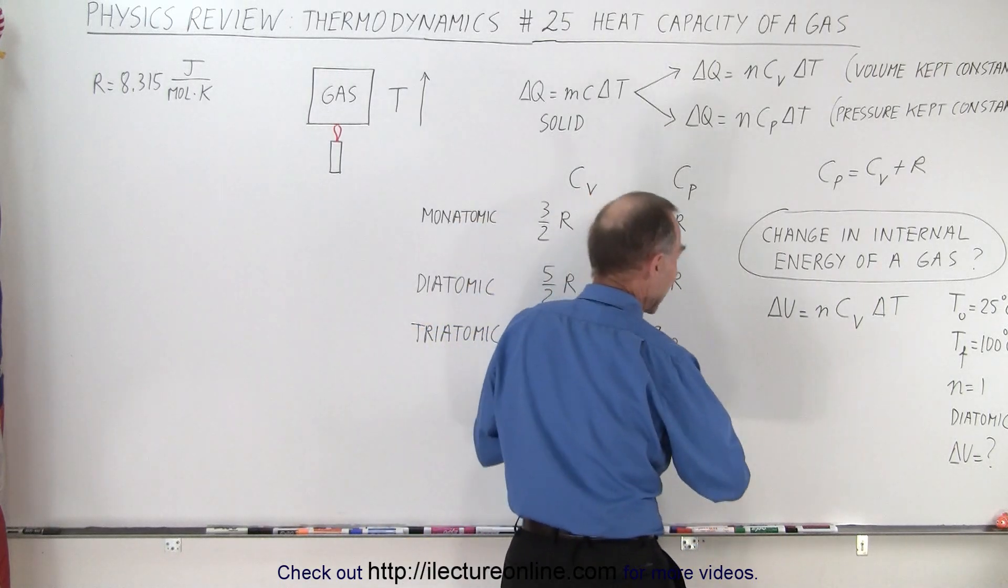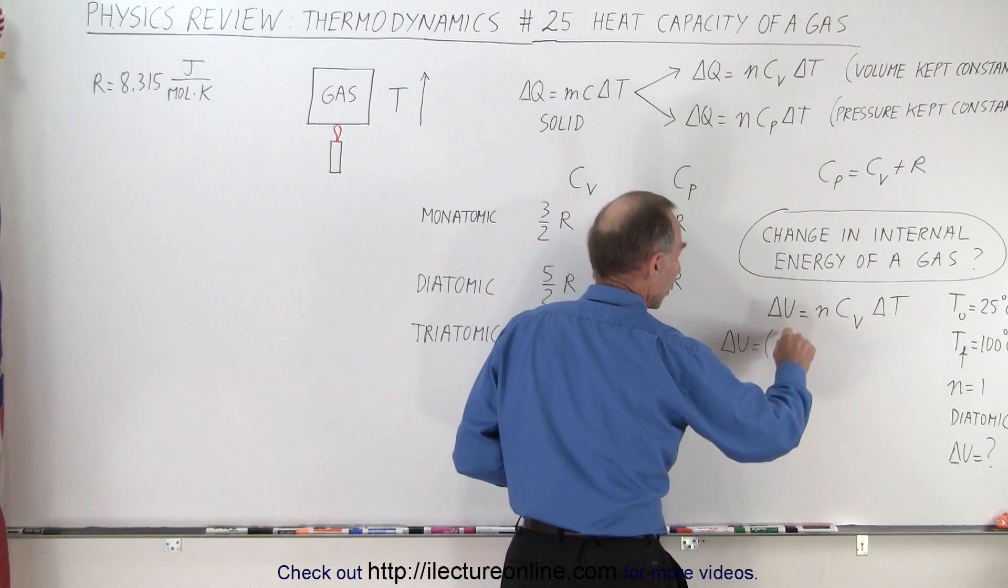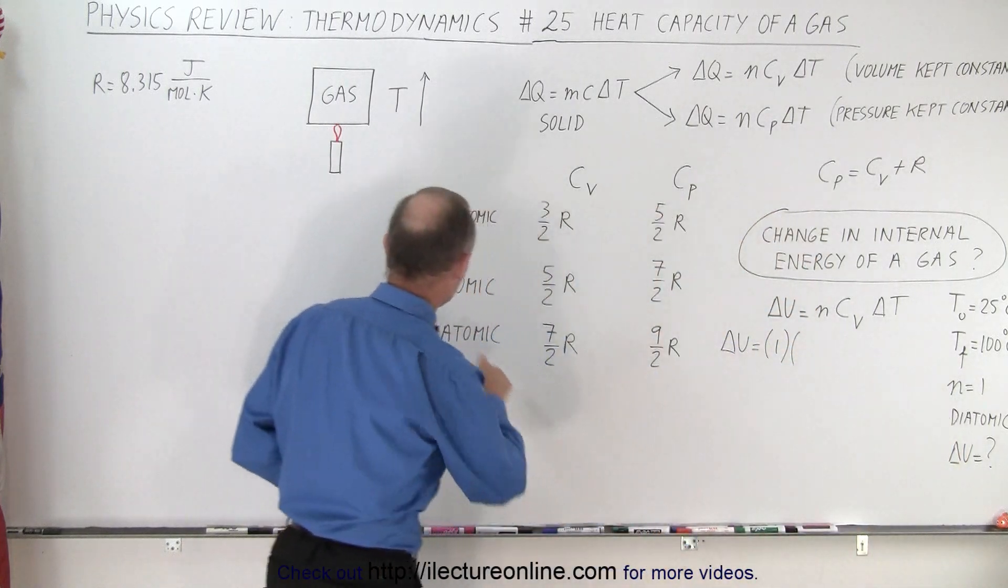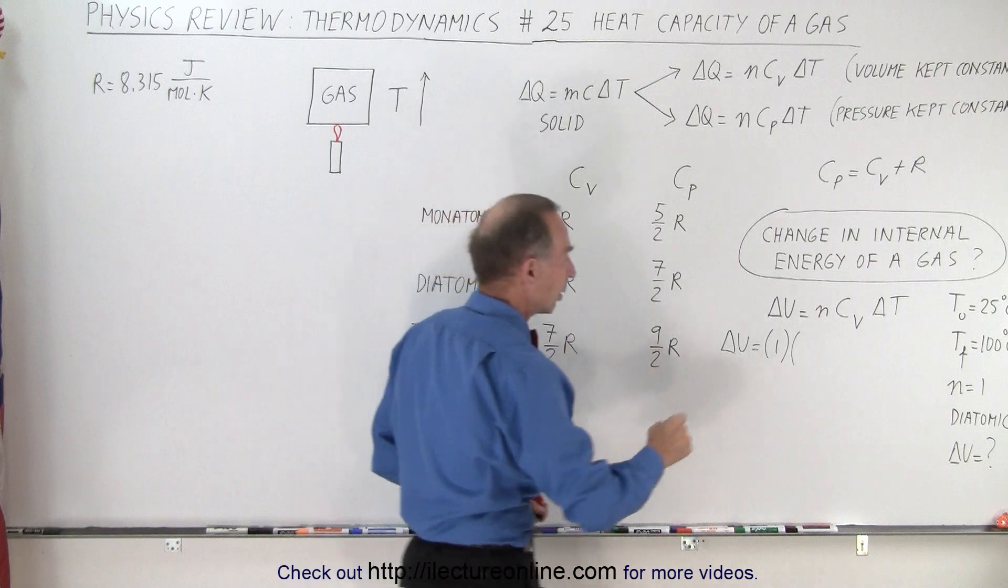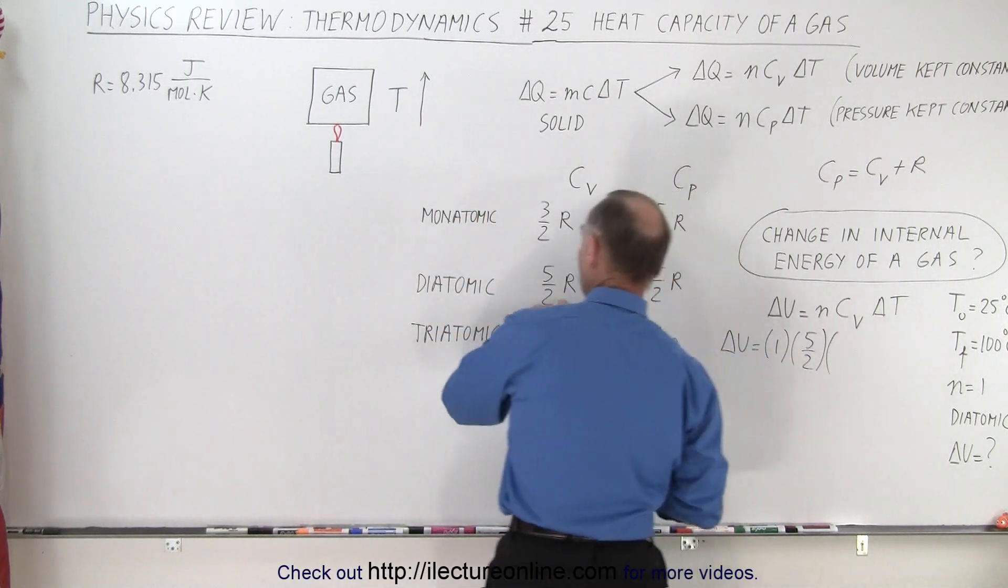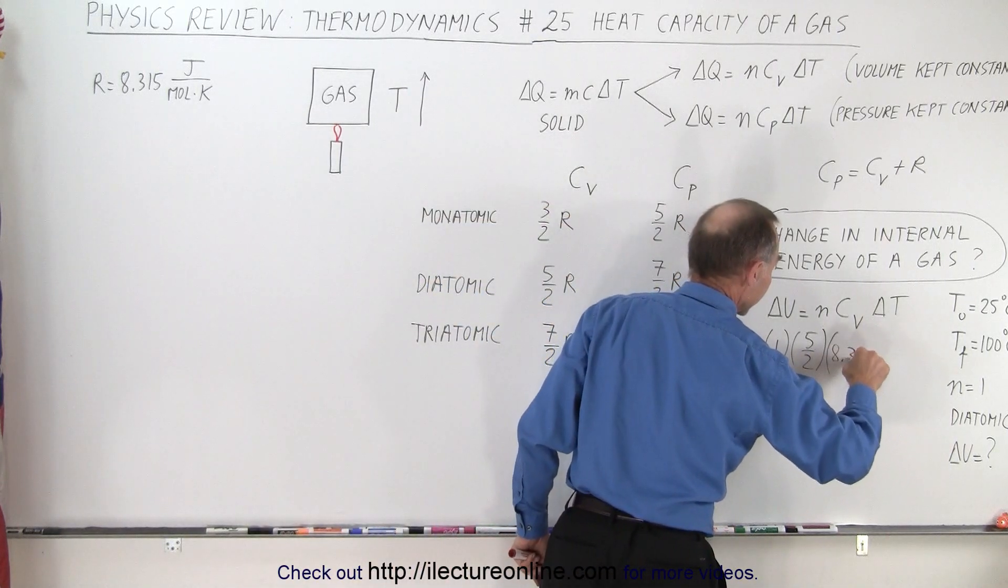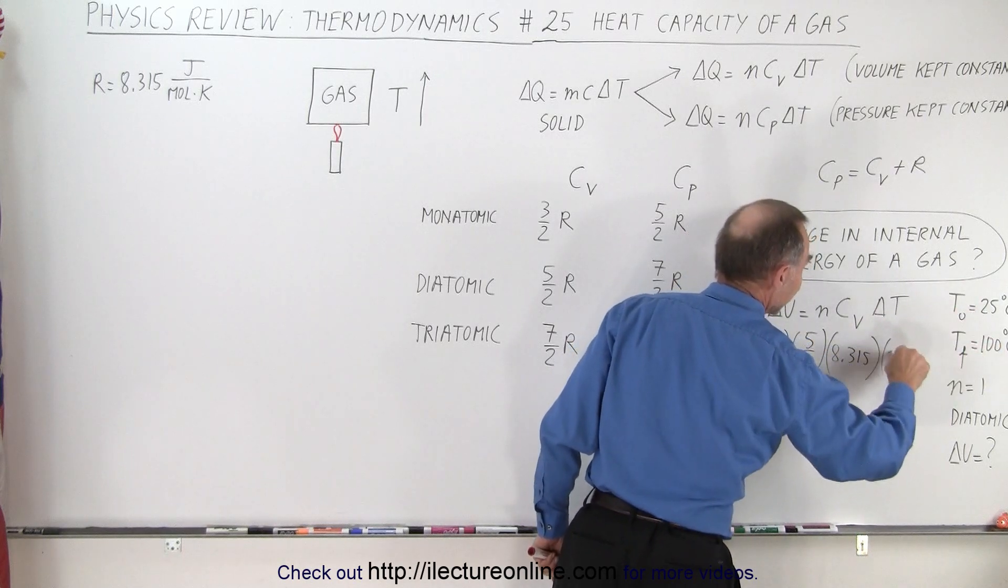Let's plug in the values and see what we get. So ΔU is equal to one mole, C sub V for a diatomic molecule. So we come over here, diatomic molecule, C sub V, it's 5/2R. So it's 5/2 times R and R is 8.315. And the change in the temperature from 25 to 100, that's 75.